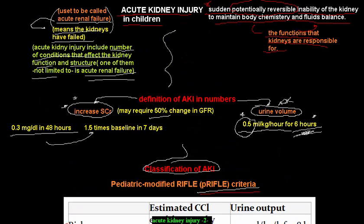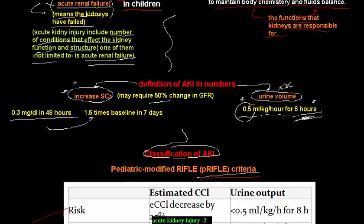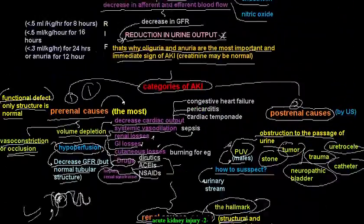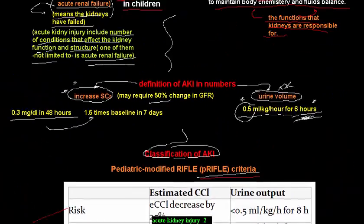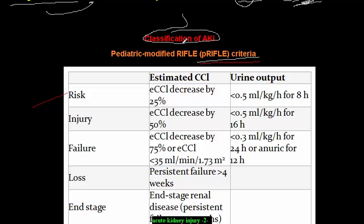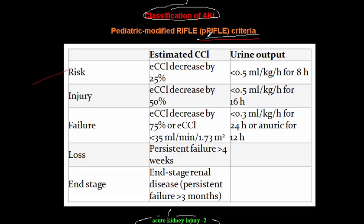The previous video covered the definition, pathophysiology, and causes of acute kidney injury. Now we move to the stages of acute kidney injury using the RIFLE criteria. Physicians use RIFLE to classify acute kidney injury into stages: Risk, Injury, Failure, Loss, and End-stage renal failure.